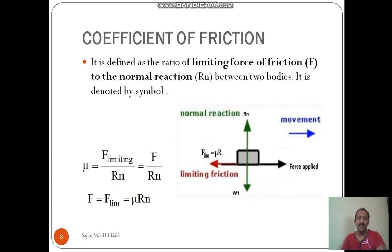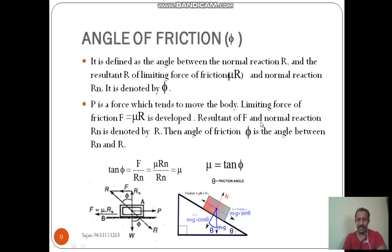Next is the coefficient of friction. It is the ratio of limiting force of friction to the normal reaction — limiting friction divided by normal reaction. That ratio is called the coefficient of friction, denoted by mu.